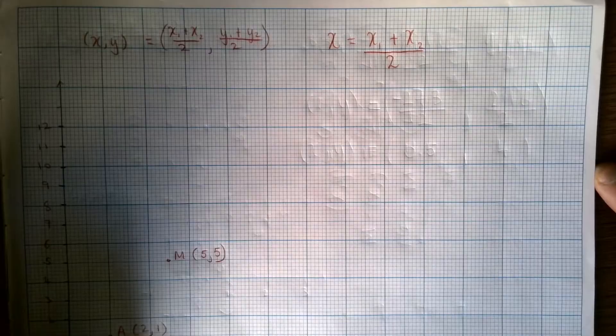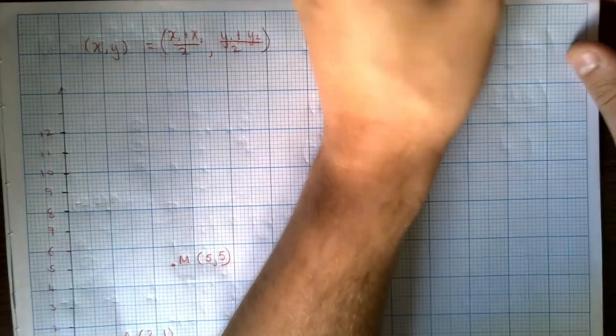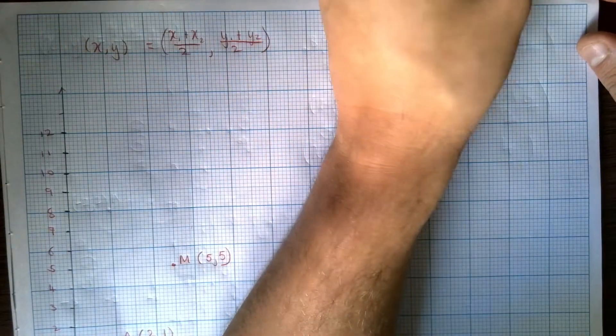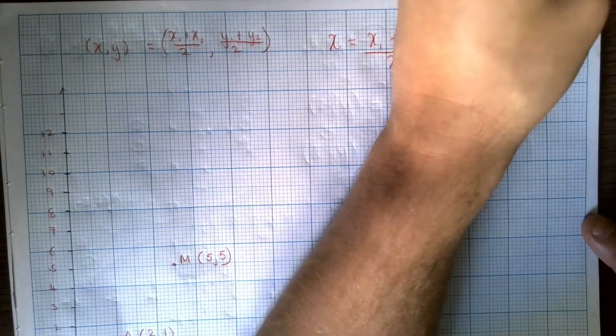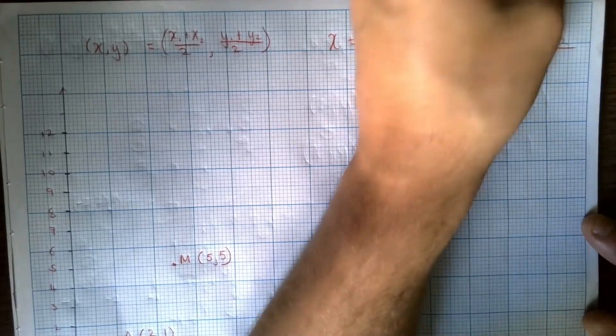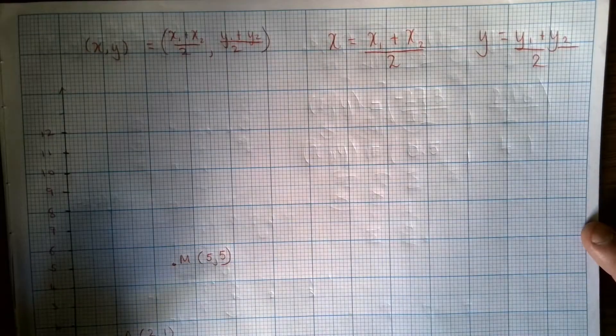Now, we can also do the same for Y. So I might just do that at the same time and then we can solve them parallel. So Y equals Y1 plus Y2 all over 2.